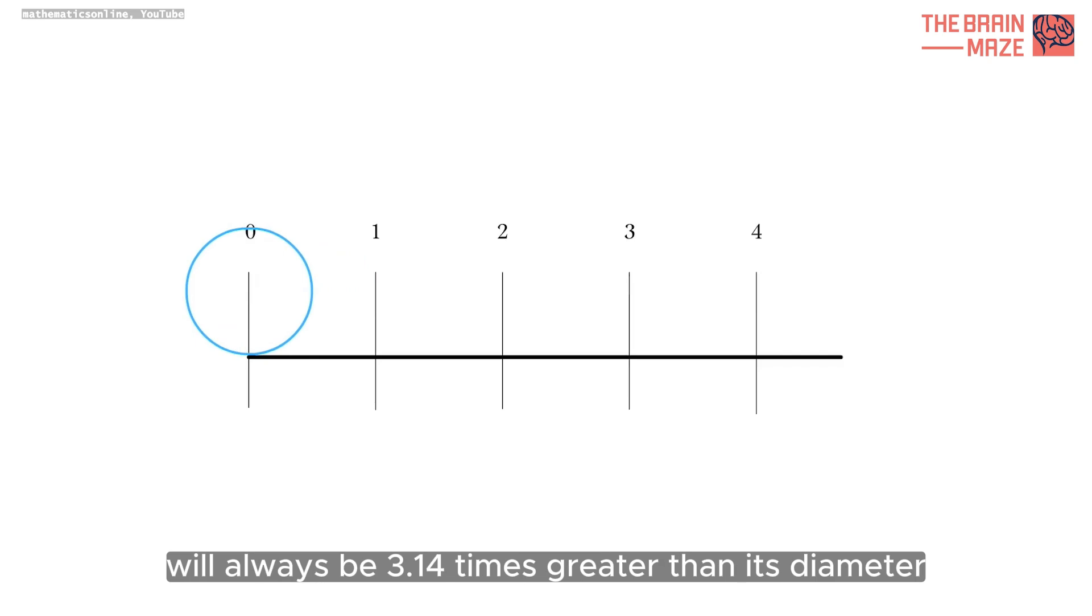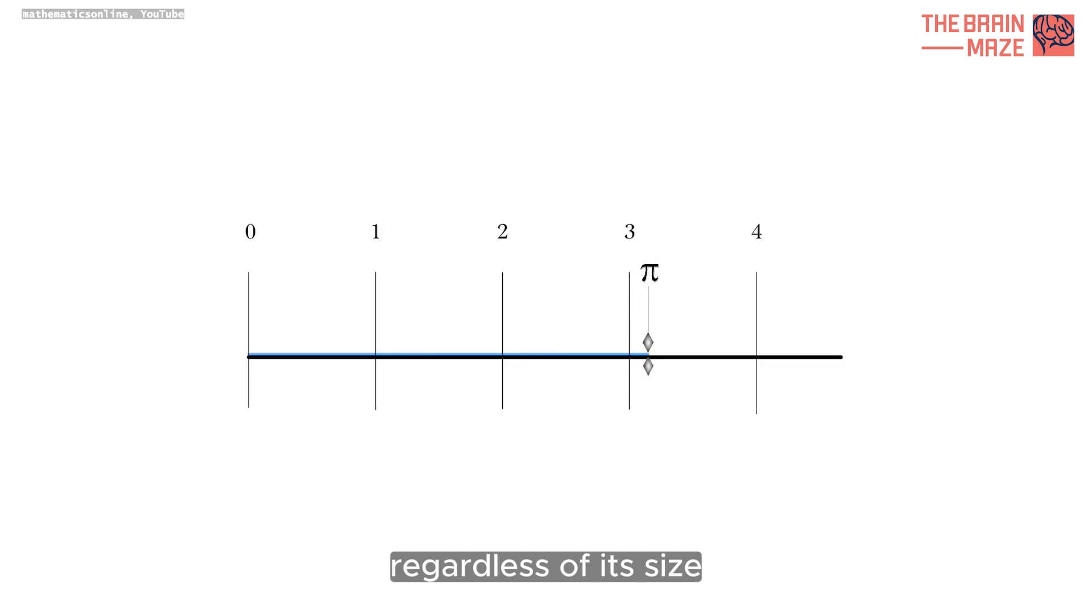A circle's circumference will always be 3.14 times greater than its diameter, regardless of its size.